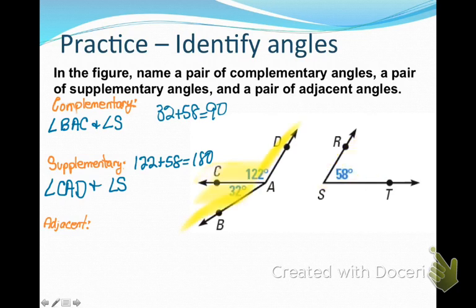Remember that adjacent angles are just two angles that share a common vertex and a side. What I have here is angle BAC and angle DAC. They both share the common vertex of A and side ray AC — you always start with the endpoint.